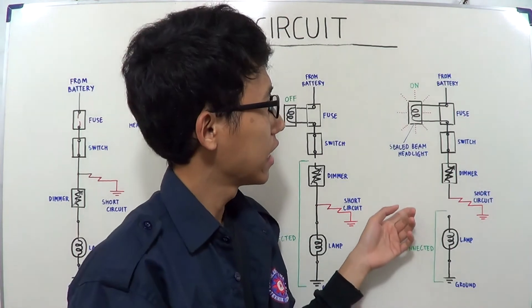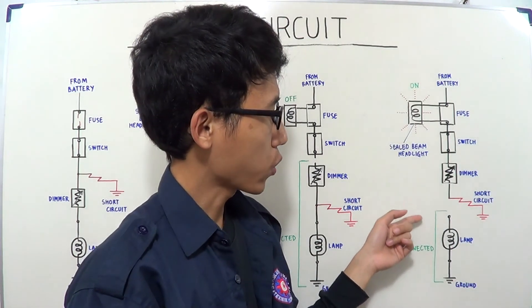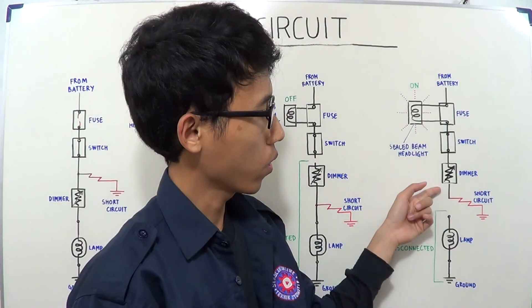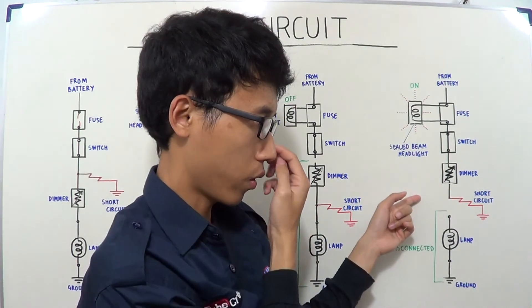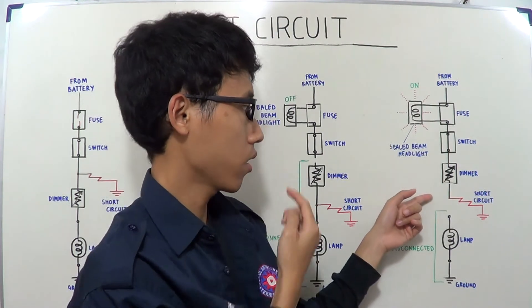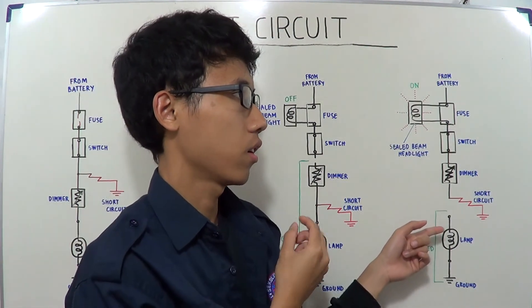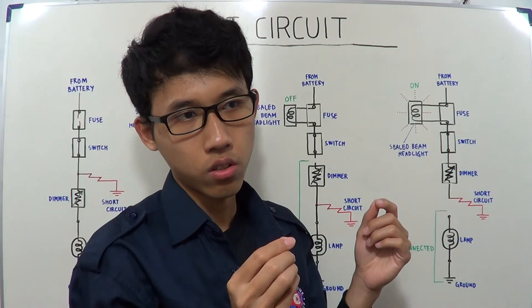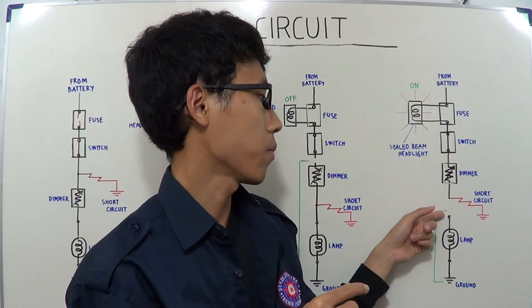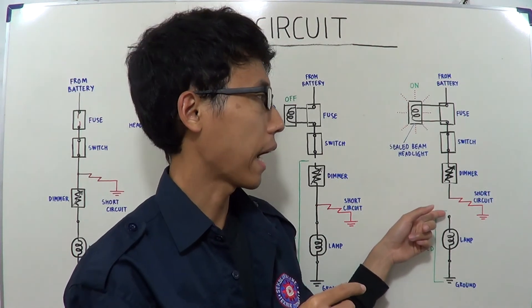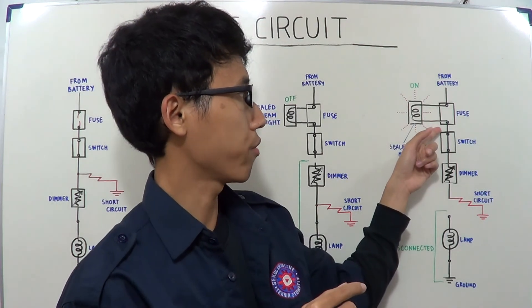After you find where the short circuit is, check if there is a faulty component such as a tear in the cable insulator. Replace the broken component and replace the blown fuse.